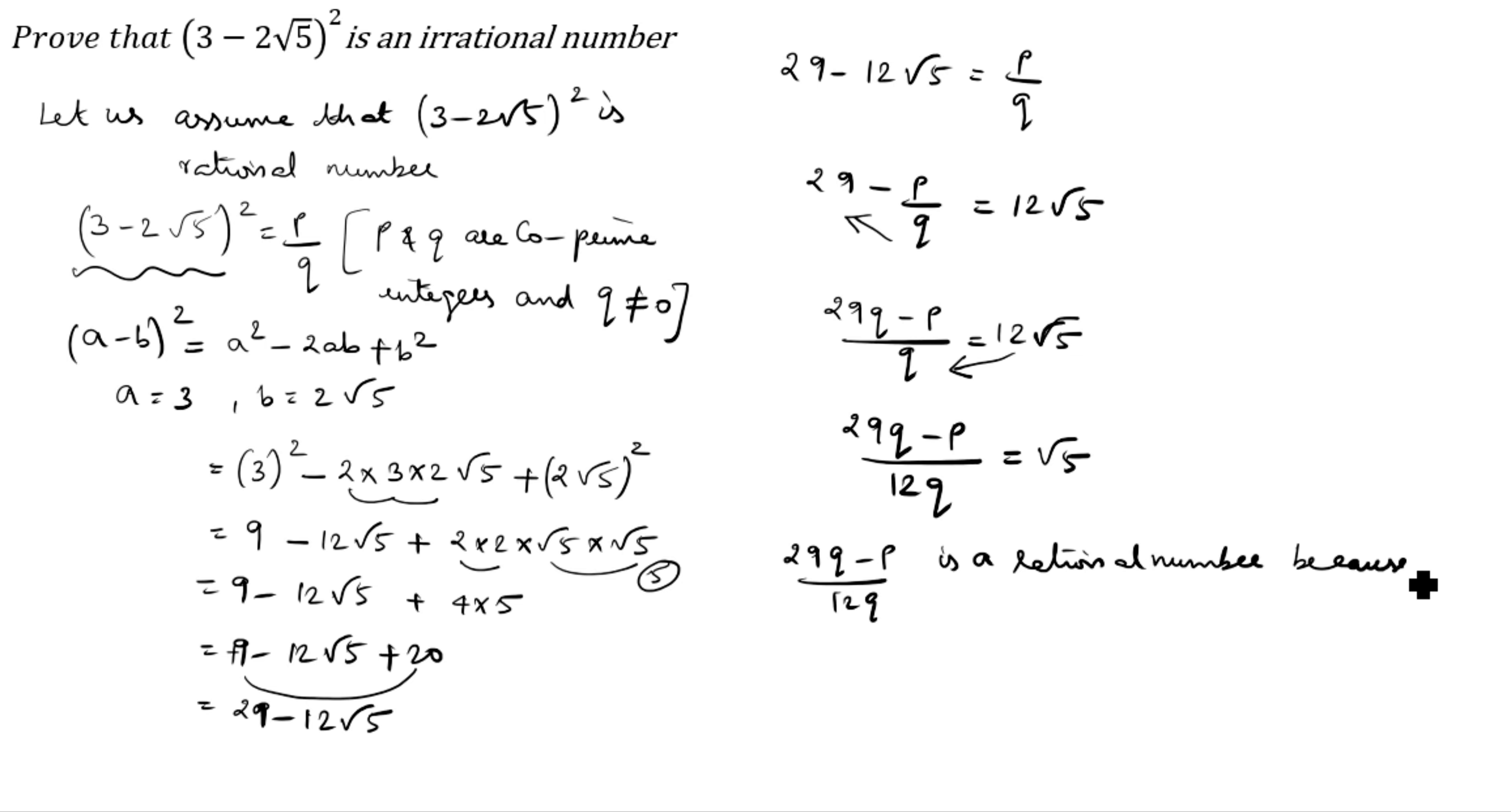This is a rational number because P and Q are integers. Root 5 is also rational number. But we know that root 5 is an irrational number according to theorem 1.4. So there is a contradiction which has arisen due to false assumption.